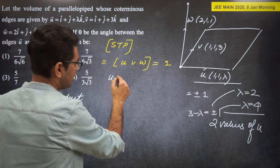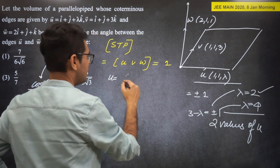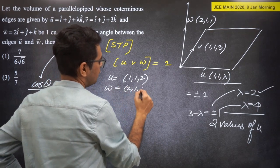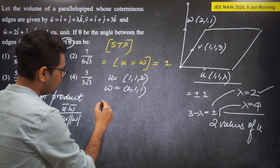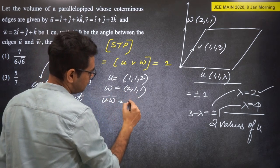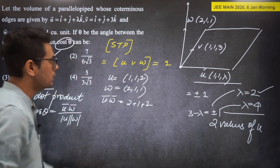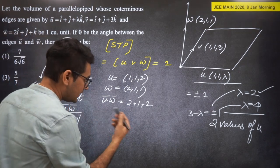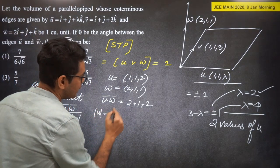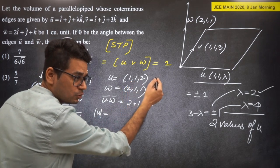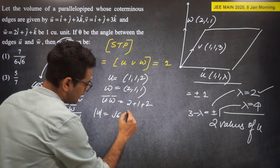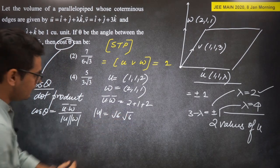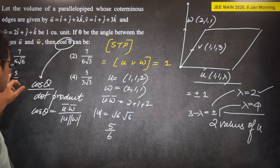For lambda = 2: U = (1, 1, 2), W = (2, 1, 1). U·W = 2 + 1 + 2 = 5. |U| = √6, |W| = √6. cos(theta) = 5/6. This doesn't match any answer option, so lambda = 2 doesn't give the answer.